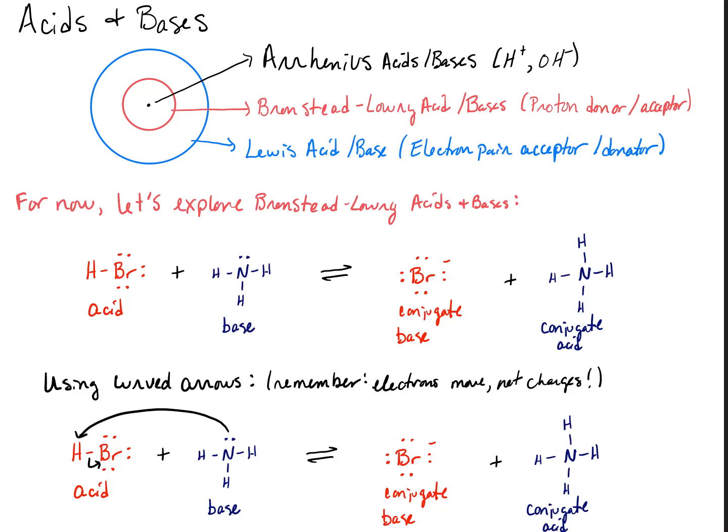When we look at acids and bases, there's three definitions that we typically use. The first is the most limiting, and that is the Arrhenius acid and base definition.